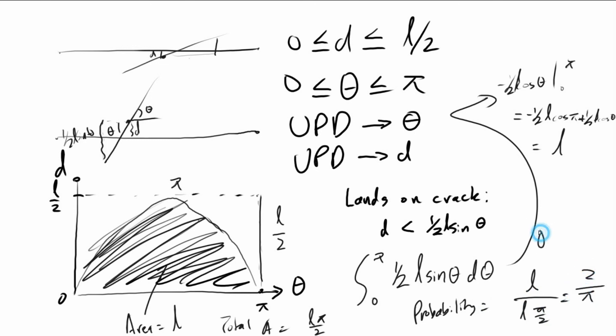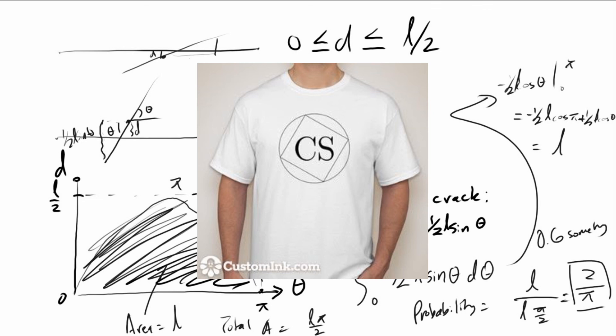2 over pi is approximately 0.636 — that is the probability that the needle will land on a crack when the needle length equals the distance between the cracks. That's Buffon's needle problem — a cool little problem. We are also selling Cyclic Squares t-shirts, so if you're interested, like our status on Facebook and we'll be in contact. I'll see you guys next week.